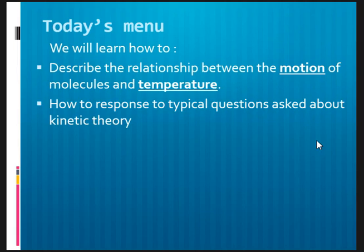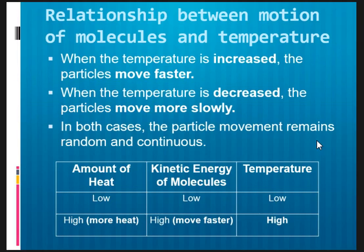Alright, now let's start by having a look at the relationship between motion of molecules and temperature. When the temperature is increased, we know that the particles will move faster. Correspondingly, when the temperature is decreased, the particles move more slowly. In both cases, the particle movement remains random and continuous. The simple kinetic theory of matter is basically referring to a model whereby particles that make up matter are always continuously moving.